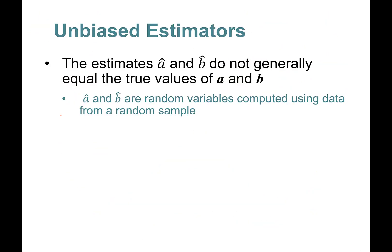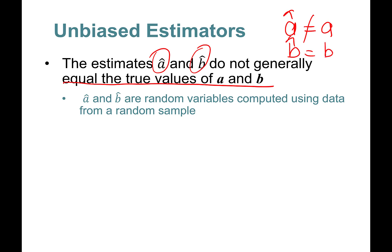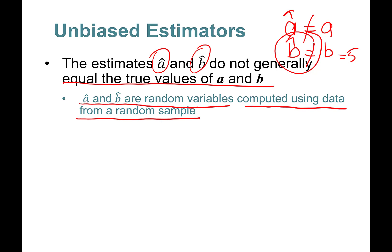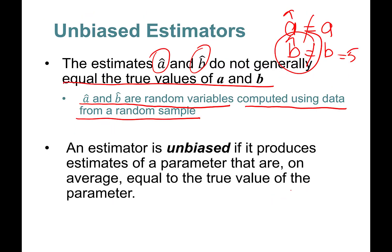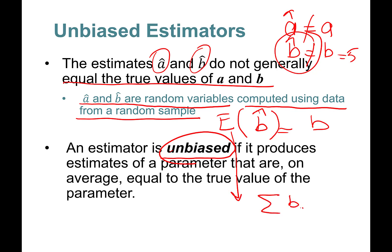Let's learn about unbiased estimators. a-hat and b-hat do not generally equal the true values — that's okay. They are random variables computed using data from a random sample. An estimator beta-hat is called unbiased if it produces estimates of a parameter that are on average — the expected value of beta-hat, taken across samples — equal to the true value.